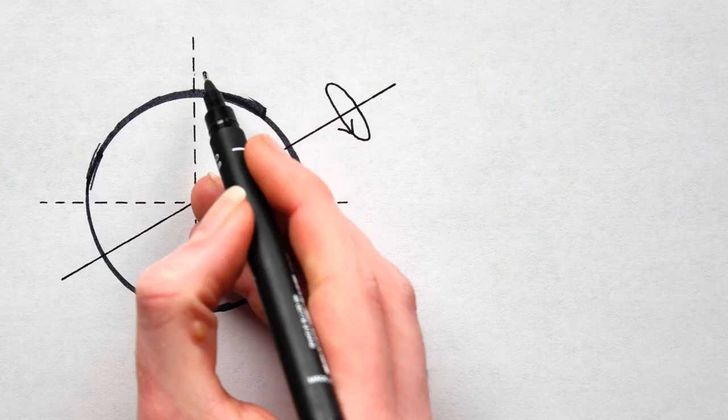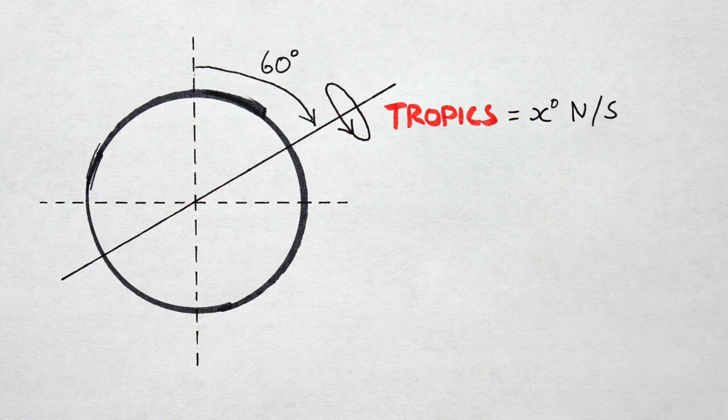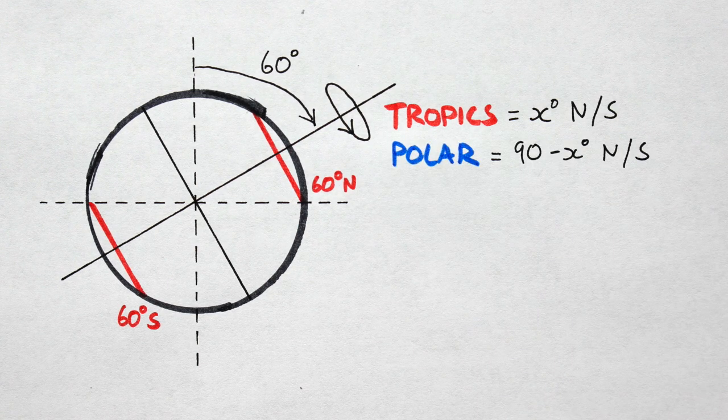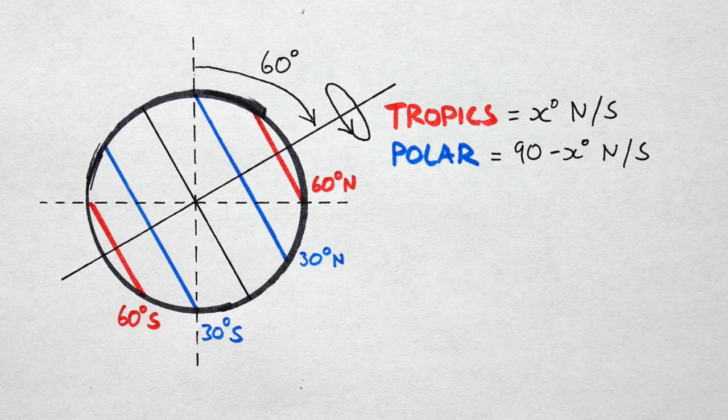Here's a planet tilted at 60 degrees. Using the same construction as before, the tropics would be at 60 degrees north and 60 degrees south. And the polar circles would be at 30 degrees north and south. So they've switched.